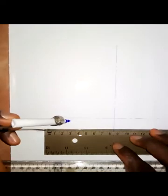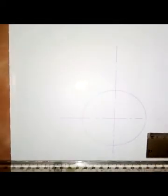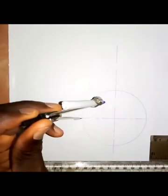The radius of the circle is 40mm, so I will take my compass and measure 40mm and put it at the center to draw a circle. Now I will divide the circle into 12 equal parts.